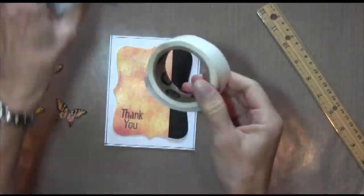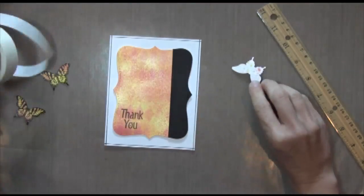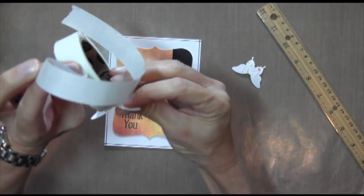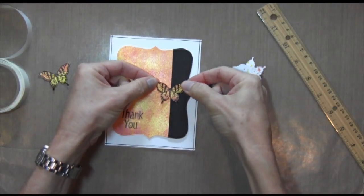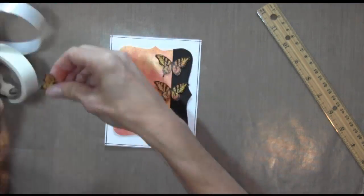And then I used some glue dots at the center of each butterfly. I think it's easier to do the middle one first, and then you can space them out evenly.